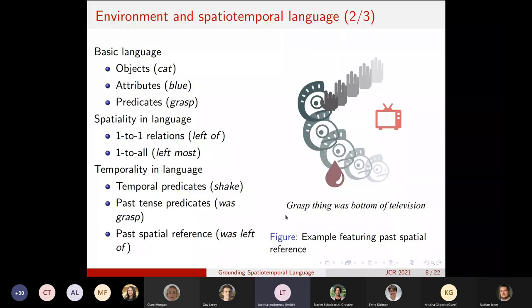And we also use past spatial reference to indicate that the given spatial reference was true in the past and is no longer true in the present. So here, for instance, there is an example that has past spatial reference because the chameleon here was bottom of the television. It moves on the top and right now in the present, the agent is grasping it. So 'grasping in the present was bottom of television' because the chameleon was bottom of television at first.